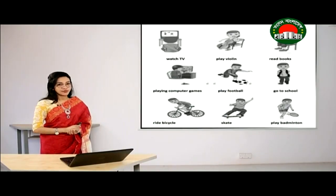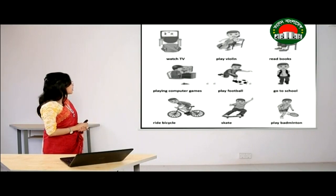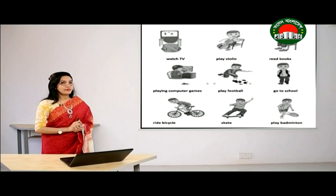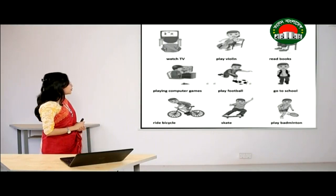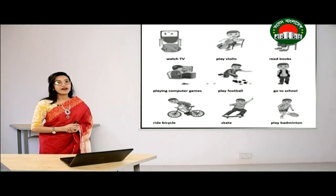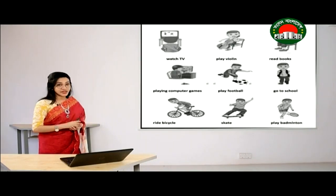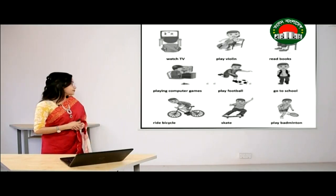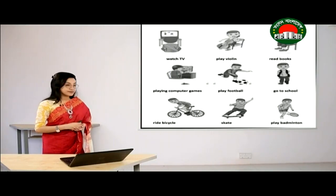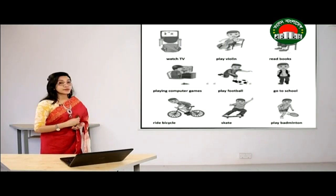Now, here we can see another picture where a great number of students are doing something. How can we make sentences out of these pictures? Let's describe. In the first picture, we can see that someone is watching TV. In the second one, a girl is playing a violin. In the third one, we can see a boy reading books. In other pictures, a boy is playing computer games, a student is playing football, a little boy is going to school, a boy is riding a bicycle, a boy is skating, and in the last picture, a boy is playing badminton.